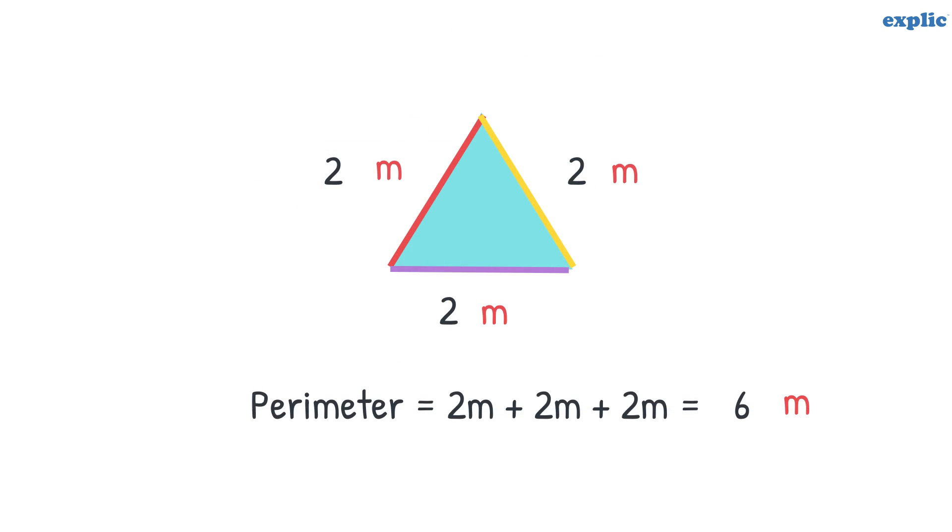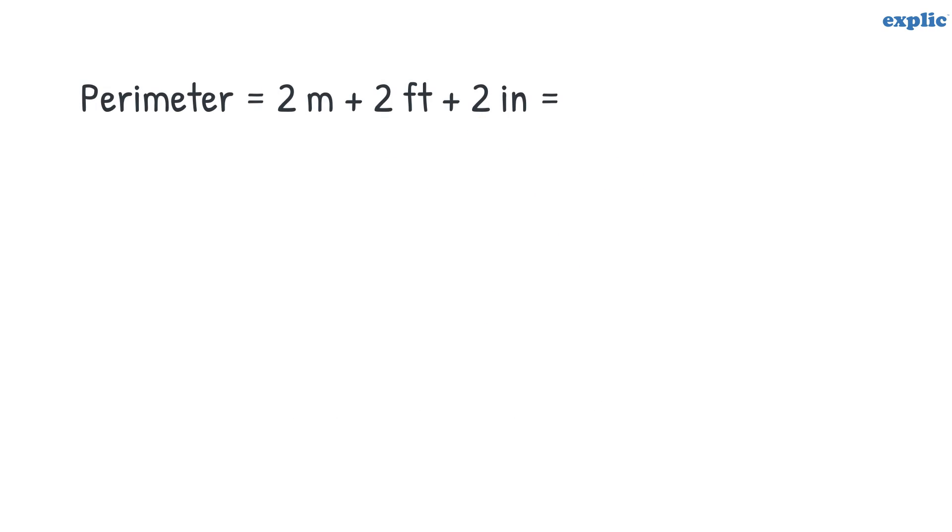Remember, the unit of the measurement of the length should be the same to find out the perimeter. For example, all sides of the given triangle are measured in the same unit, meter. Hence, the perimeter will also be in meter. If the units of the measurements are different, convert them into the same units before adding.